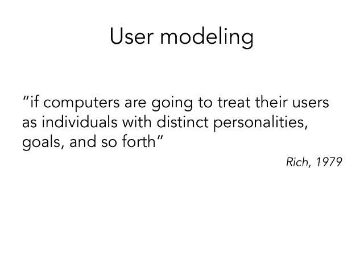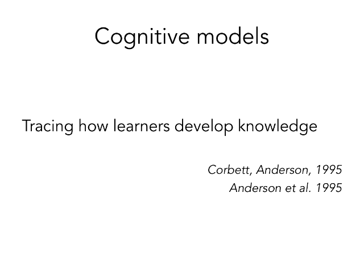Going back to the 1970s, the development of user modeling is fascinating — in the 70s attention was already being paid to the importance of computers being able to respond individually to people, not necessarily the same response for everyone. As Rich put it in a 1979 paper, the emphasis was on being able to treat individuals as individuals with distinct personalities and goals. Even today, that's a goal educationally and in general web activity: to be able to customize or treat the experience as personal.